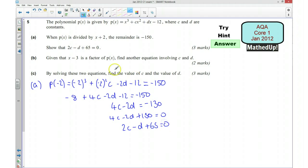And 2 is a common factor of all of this, so I can divide by 2, so that's going to be 2c minus d plus 65 equals 0 as required. Okay, so that's part a. For part b, we're given that x minus 3 is a factor. We want to find another equation involving c and d. So this time we're going to have p of 3. So that's going to be 3 cubed plus 3 squared times by c plus 3d minus 12.